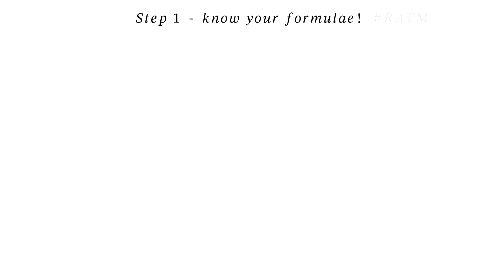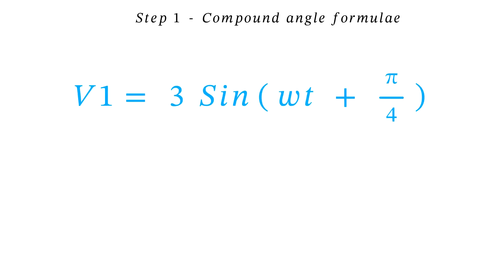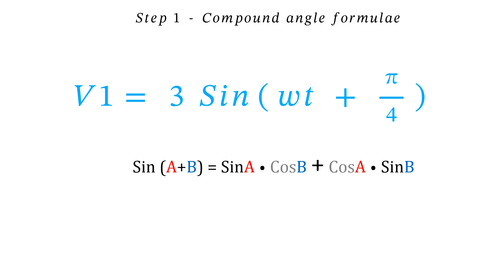Know your compound angle formulas. v1 is 3 sine(ωt + π/4) radians, and I'm going to use: sine(a + b) = sine(a)cos(b) + cos(a)sine(b).